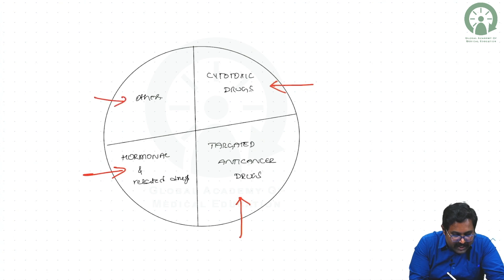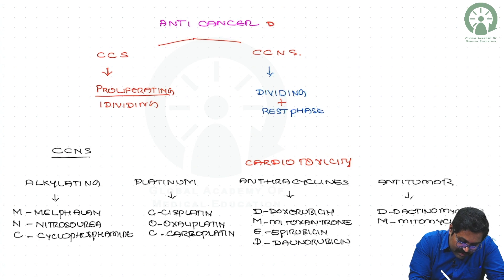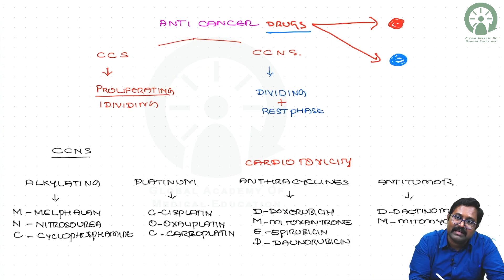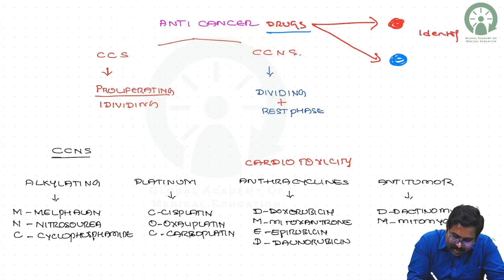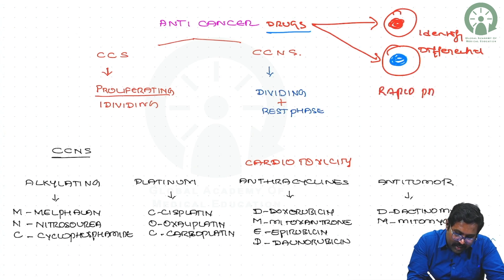When you give anti-cancer drugs, these drugs will act not only on the cancerous cells but will also act on the normal cells. These anti-cancer drugs are not able to differentiate between the cancerous cell and the normal cell. The reason is that both cancerous cells and normal cells can undergo rapid proliferation, which is why anti-cancer drugs also act on normal cells and produce adverse effects.